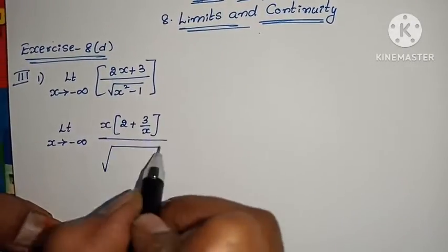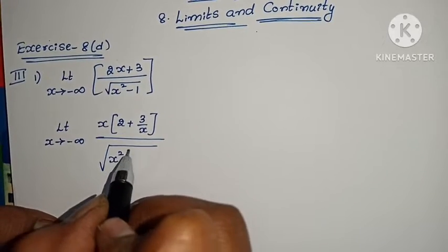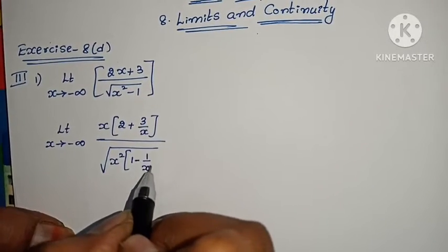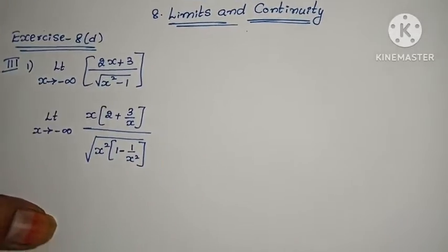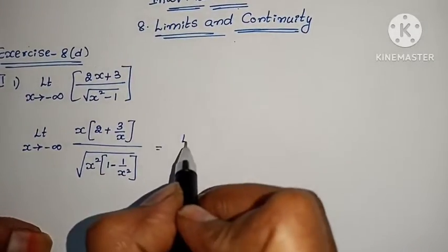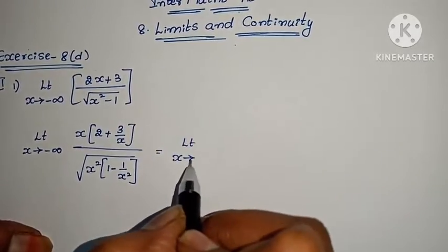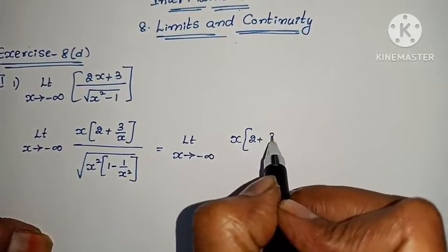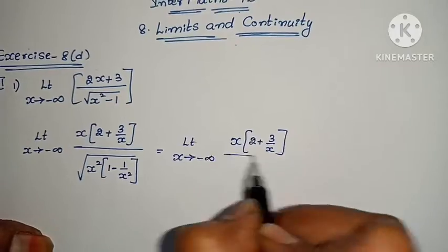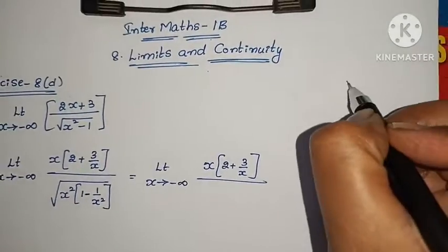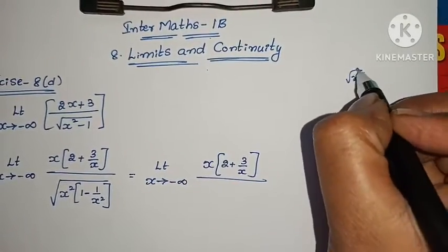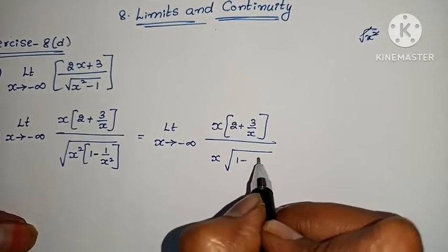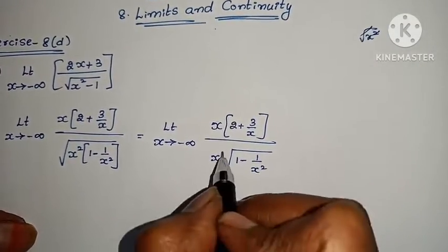In the denominator, take x squared common from inside the root, giving root of (1 minus 1/x²). So the expression becomes: limit x tends to minus infinity of x times (2 + 3/x) divided by root of x squared times root of (1 minus 1/x²). The square root of x squared and x cancel.